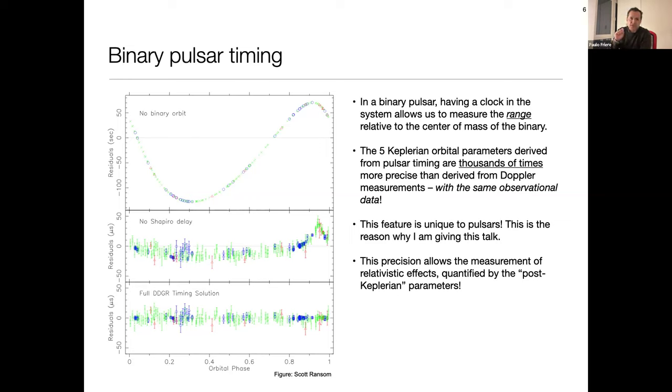And the result for this is that the five Keplerian orbital parameters that we can measure from pulsar timing become thousands of times more precise if we can establish a coherent solution. And this is basically for free, and this is a really important feature for binary pulsars, and it's unique to them. That's why we can use them for studying gravitational waves, studying these orbital effects in these binaries.